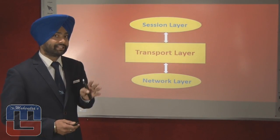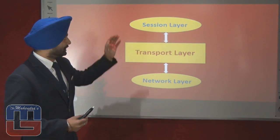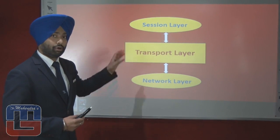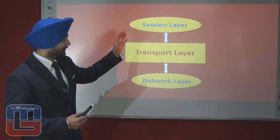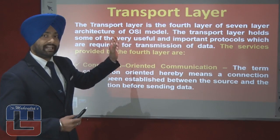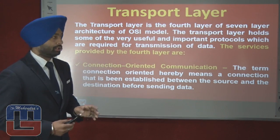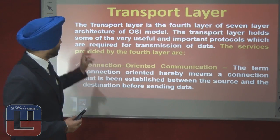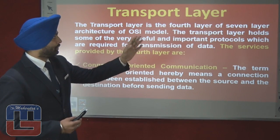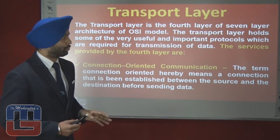Let's see where actually the transport layer is positioned. The transport layer is positioned below the session layer, above the network layer — or rather, in between the session and the network layer. The transport layer is the fourth layer of the 7-layer architecture of the OSI model.